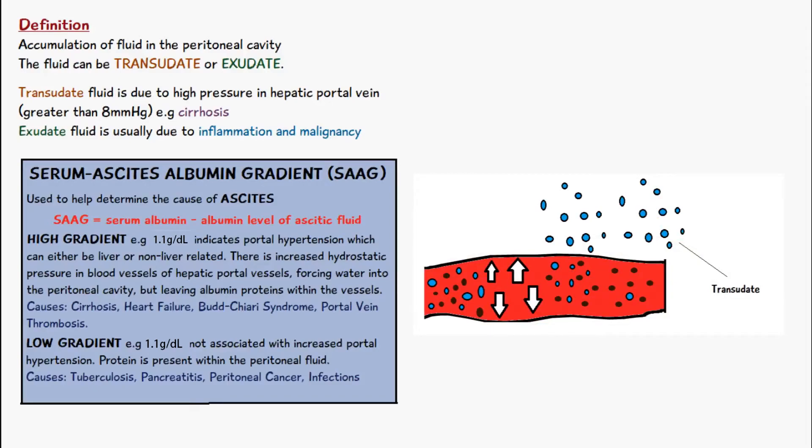The causes of this type of ascites can be cirrhosis, heart failure, Budd-Chiari syndrome, and portal vein thrombosis.